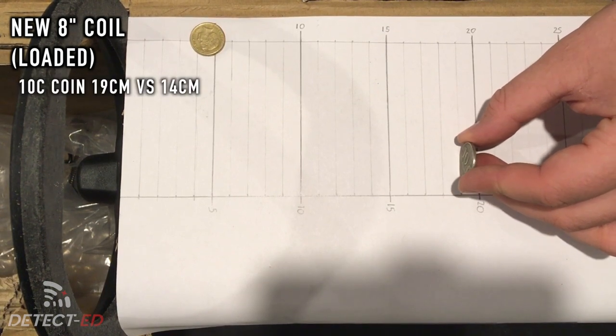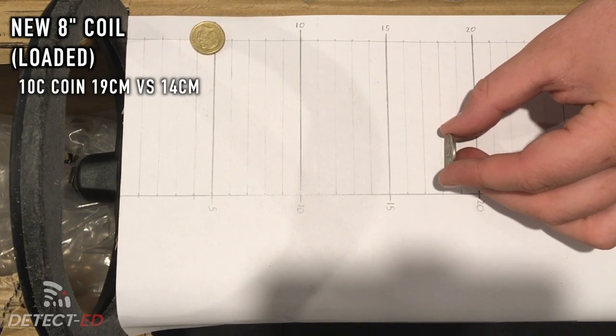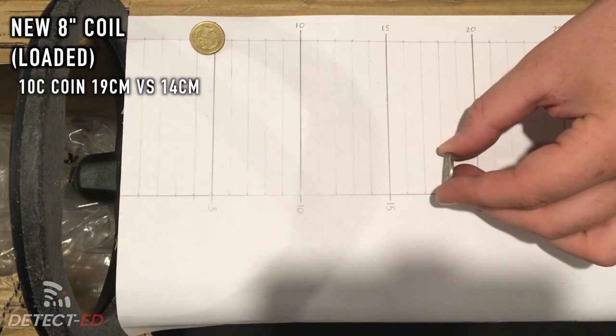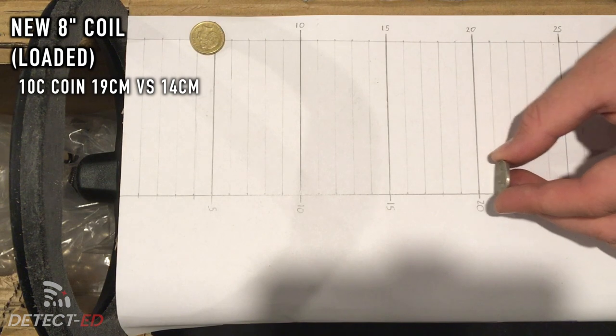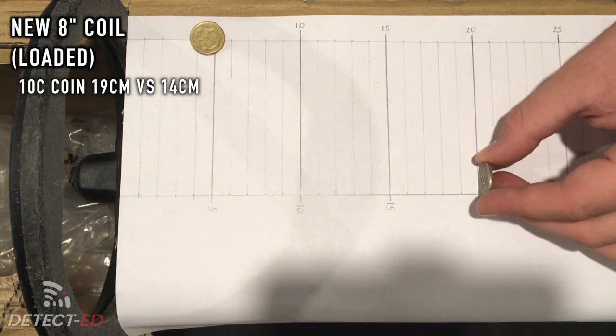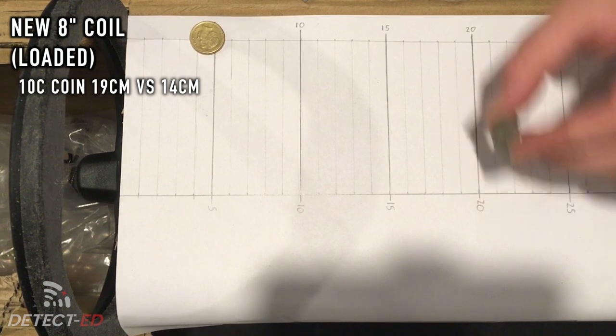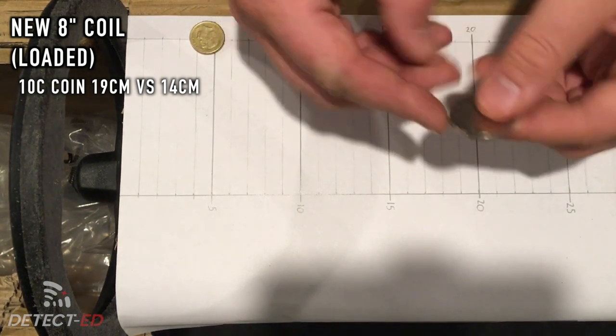Now our 10 cents for reference. We're easily getting 19 centimeters in there. This is what the Pulse Dive is actually doing in salt water. 20 is possible. We'll just do a 20 cent coin as well.